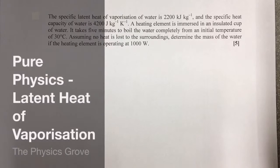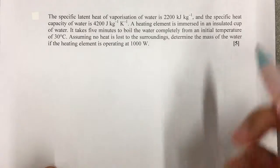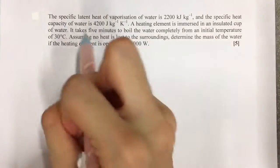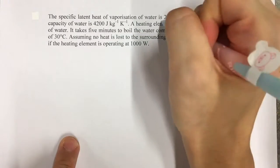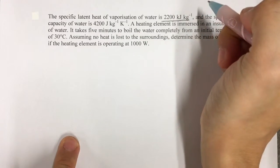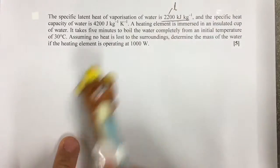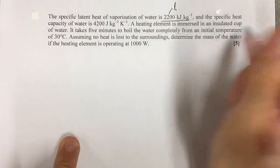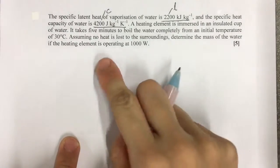Okay, this question is about the latent heat of vaporization and specific heat capacity. When we look at this question, we'll identify all the keywords. The specific latent heat of vaporization of water is 2200 kilojoules per kg, so this will be my specific latent heat. The specific heat capacity will be 4200 joules per kilogram per Kelvin.